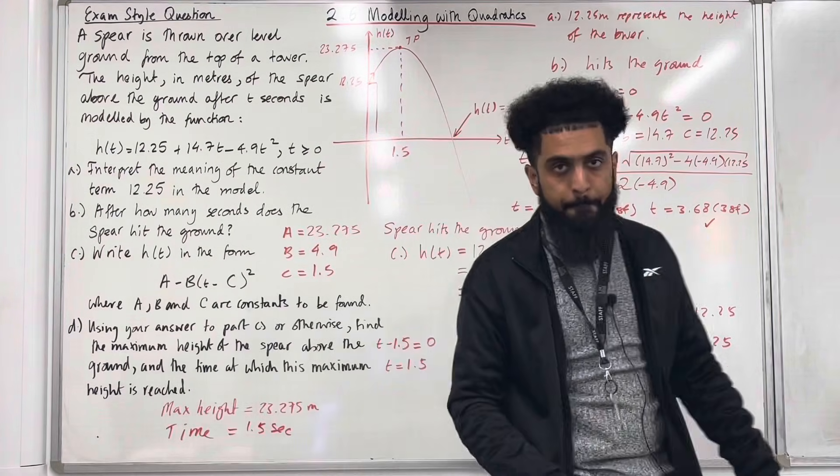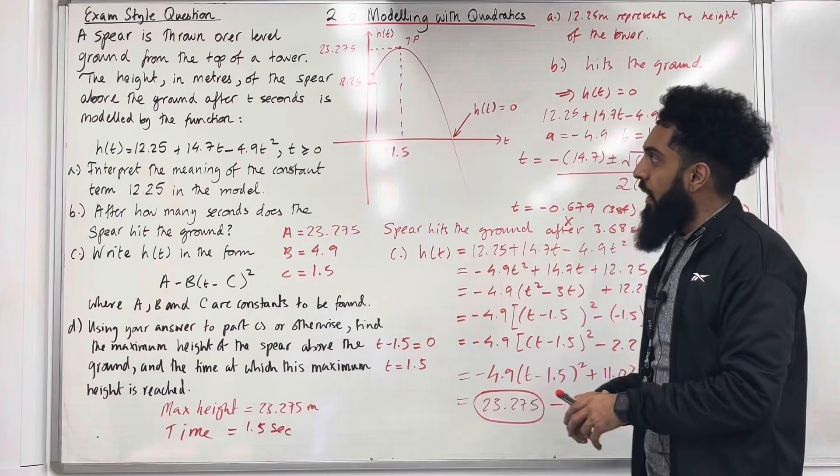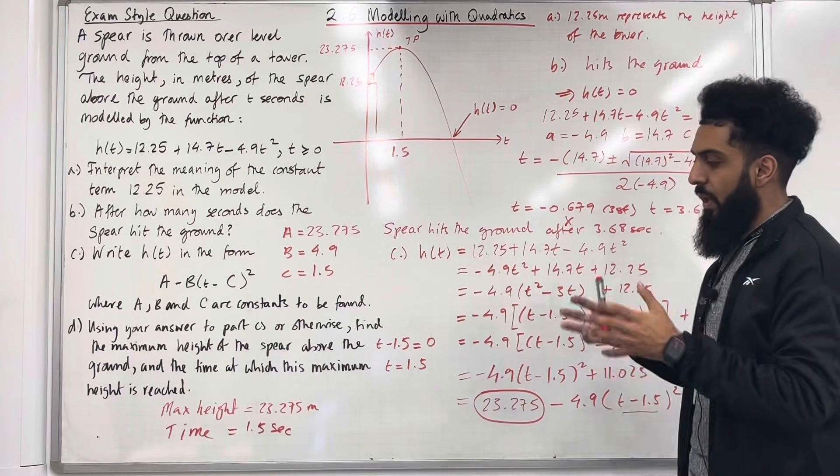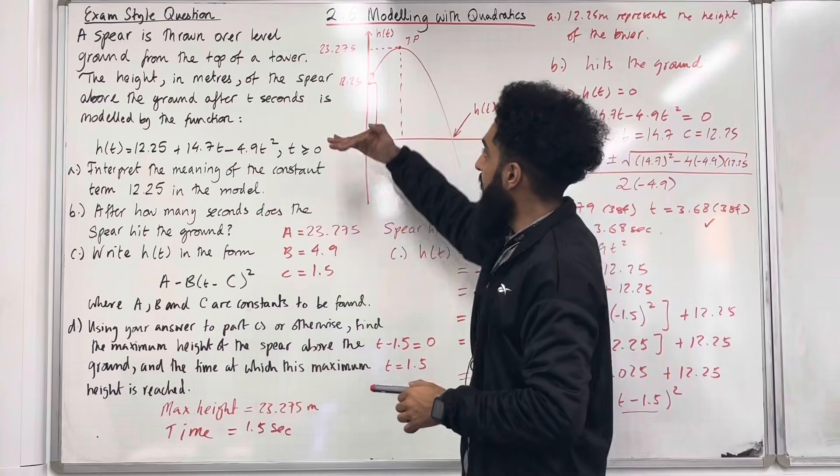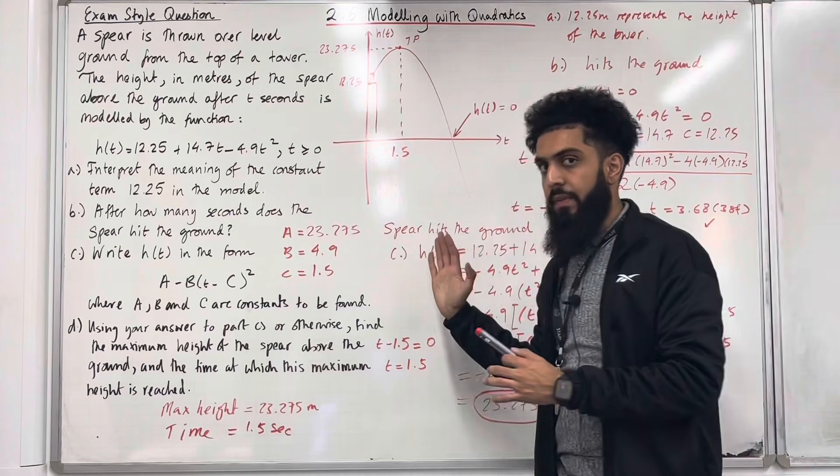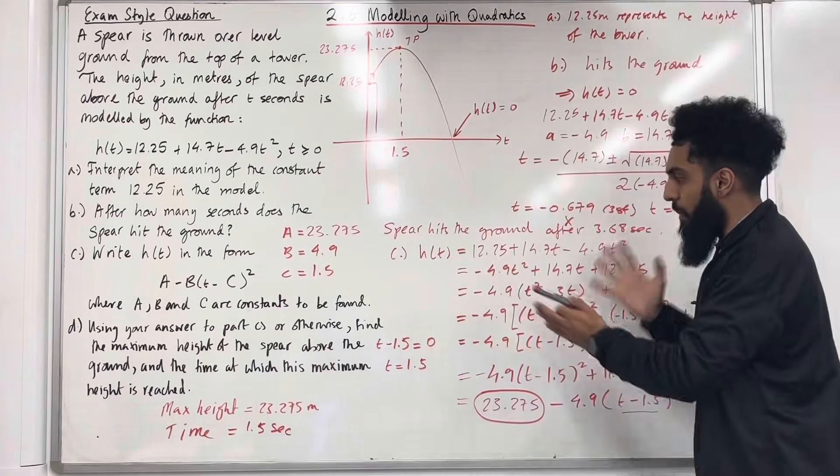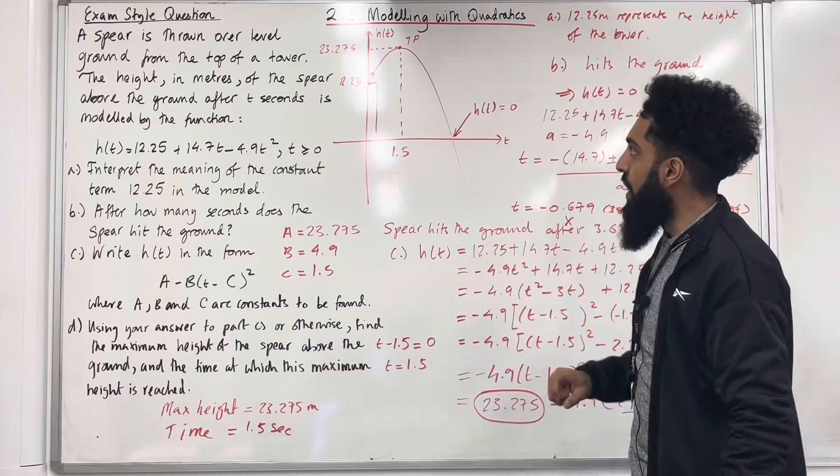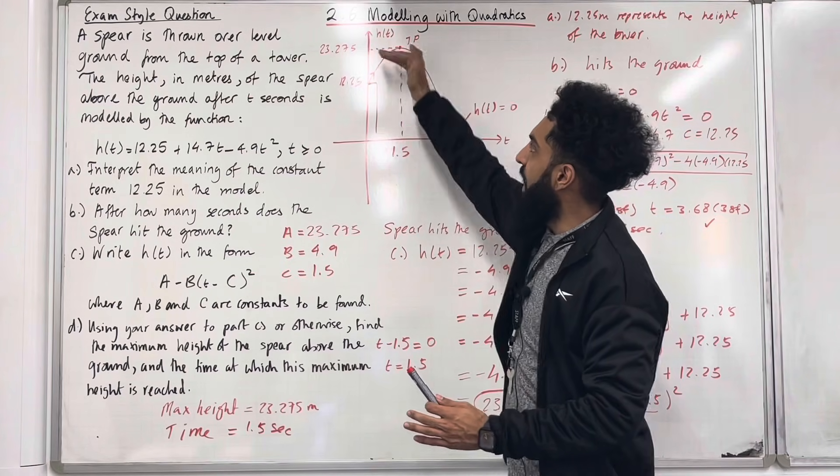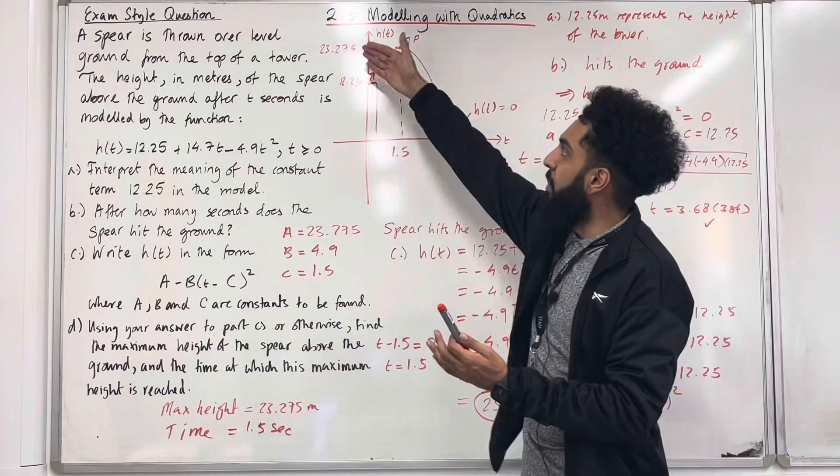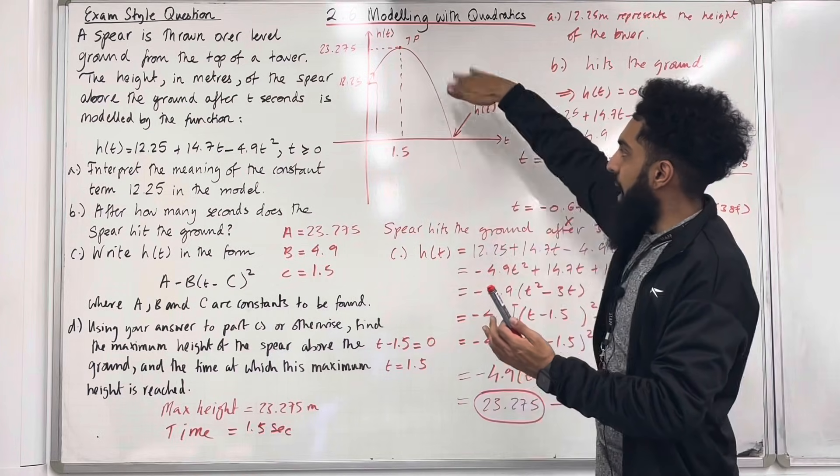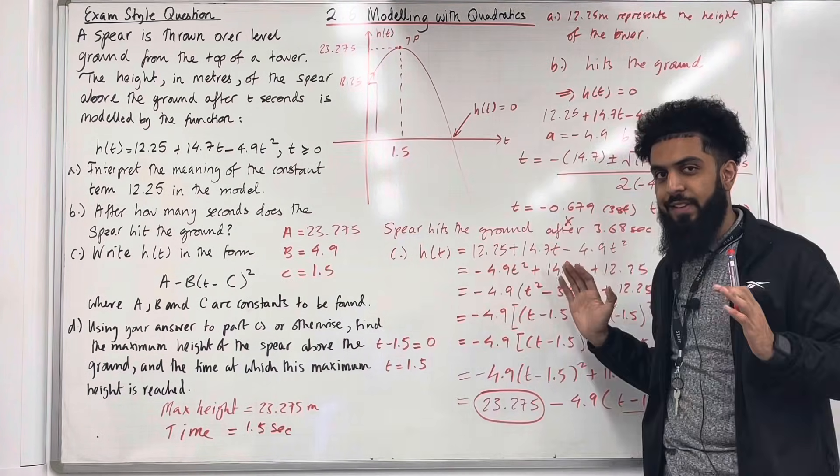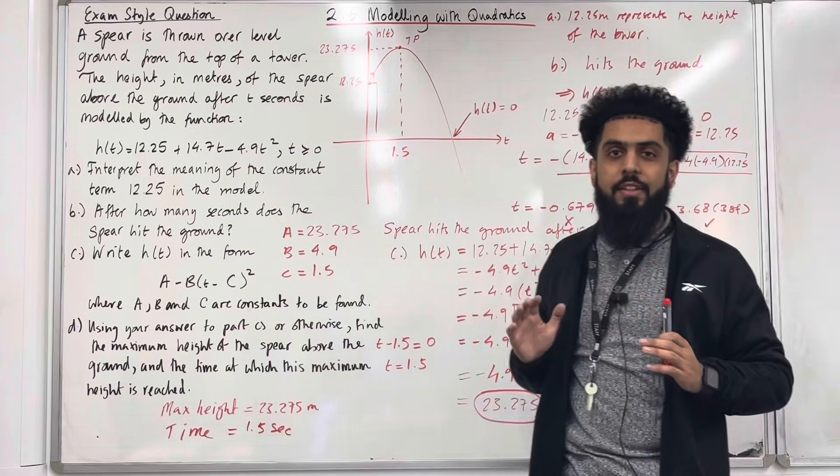One tip that I'll give you guys for modelling with quadratic questions is to start off by drawing a coordinate grid and draw the curve. Once you've drawn your curve, everything makes a lot more sense. When they ask you about max and min, etc., what you should do is label the coordinate of the turning point that tells you what your max will be. In this case 23.275 meters. And the time at which this maximum is achieved, that is 1.5 seconds. Now if you found this video useful, please don't forget to subscribe.